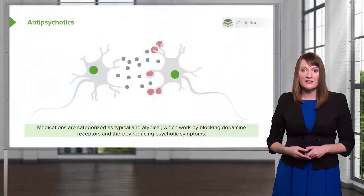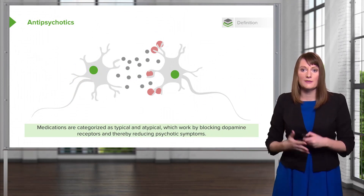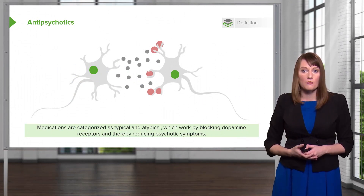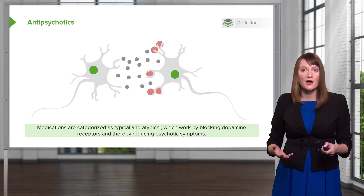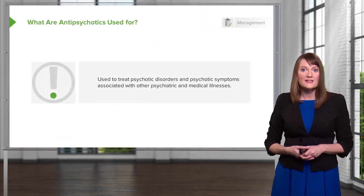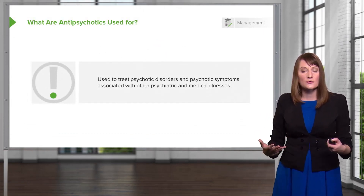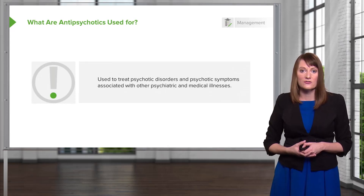Antipsychotic treatment and pharmacology is an important topic. Antipsychotics are medications, also known as neuroleptics, and they are categorized as typical and atypical. They work by blocking dopamine receptors and thereby reduce psychotic symptoms. These are used to treat psychotic disorders and also psychosis that goes along with other disorders.